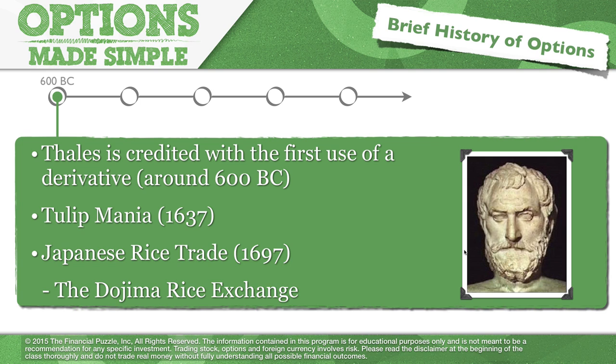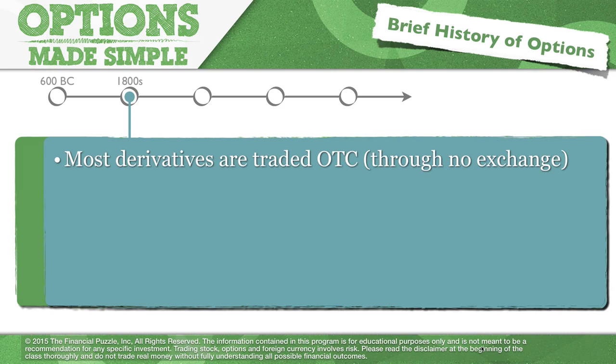Another example of derivative trading is the Japanese rice trading, the Dojima rice exchange over in Japan in the 1700s, 1600s and 1700s. This was a huge exchange where they were trading pieces of paper that today we would call basically a futures contract based on the rice harvest. And so futures trading, derivative trading in general has quite a bit of history. There's actually more than what I've mentioned here, but there's quite a bit of history.